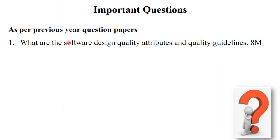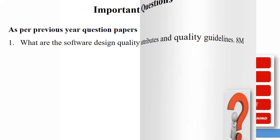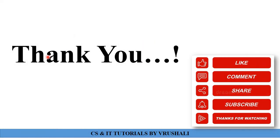In your exam, the question 'What are the software design quality attributes and quality guidelines?' is one of the most important questions for 8 marks. Here you have to mention all 5 quality attributes with their explanations and all 8 guidelines. This is all about software design. Thank you, keep learning.